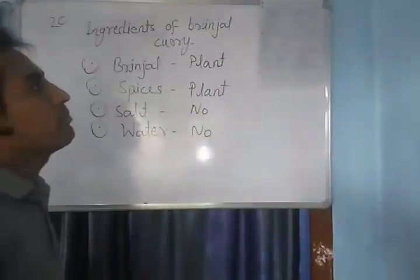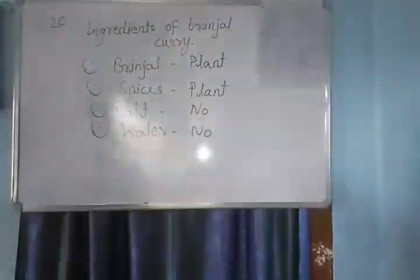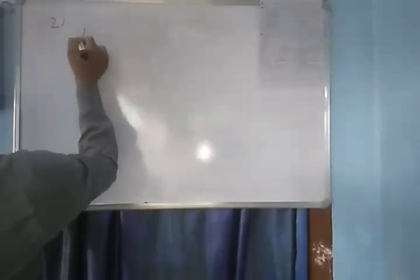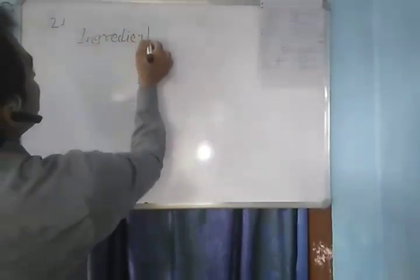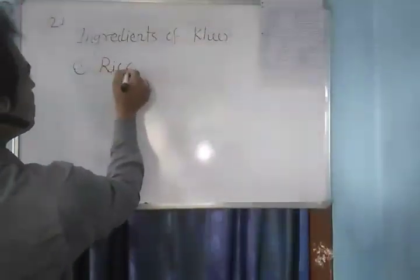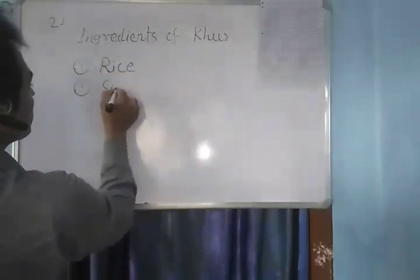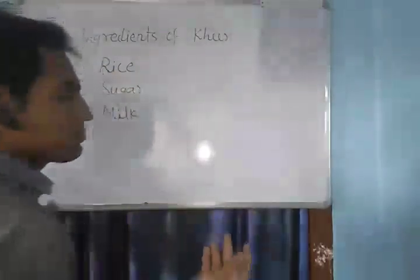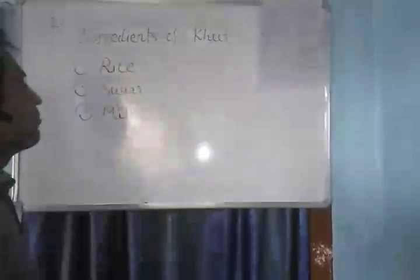Question number 21 also asks about ingredients — this time for kheer. The major ingredients of kheer: first, rice; second, sugar; and some spices. Rice, sugar, and milk are the major ingredients of kheer.